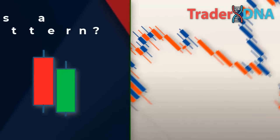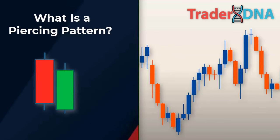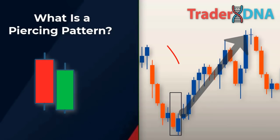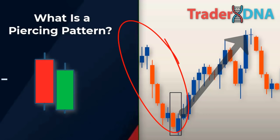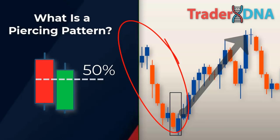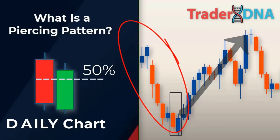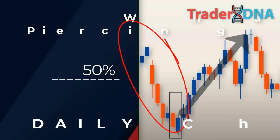The Piercing Line pattern signals a potential reversal to the upside. It appears at the bottom of a downtrend and involves a large bearish candle followed by a bullish candle that creates a new low before closing higher than the midway point of the previous bearish candle. The piercing pattern is important as a potential bullish indicator, especially on higher time frame charts such as the daily chart; on lower time frames its significance is considerably reduced.